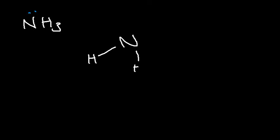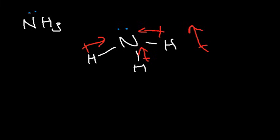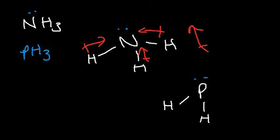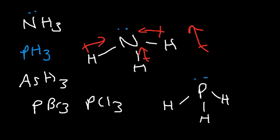Molecules with a trigonal pyramidal geometry, like NH3, are also polar. NH3 has one lone pair, and nitrogen is more electronegative than hydrogen — the dipole moments don't cancel but point generally upward. Similar molecules like PH3, AsH3, PBr3, PCl3, and NF3 are all relatively polar, as phosphorus and nitrogen are in the same column of the periodic table.